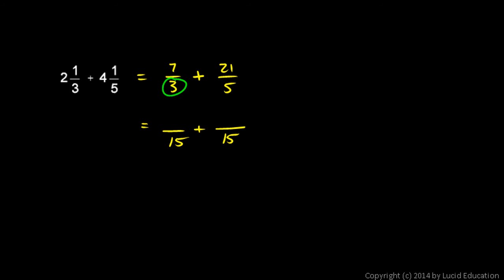I have to multiply 3 times 5 to get me 15. So when I multiply my 7 times 5, I get 35. So I have 35 fifteenths. And in this fraction, my 5 has to be multiplied by 3 to get me a 15. So the 21 has to be multiplied by 3 to get me the numerator. 21 times 3 is 63. So I have 35 fifteenths plus 63 fifteenths and that equals 98 fifteenths.